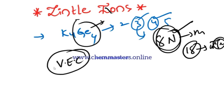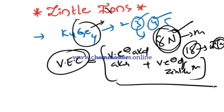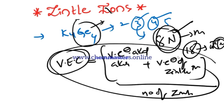To find the valence electron concentration, we use the formula: valence electrons of the alkali or alkaline earth metal plus valence electrons of the Zintl ion, divided by the number of Zintl ions.